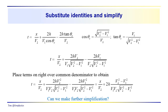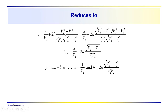We can simplify further by factoring the numerator as the square root of v2 squared minus v1 squared times itself, which cancels the square root of v2 squared minus v1 squared in the denominator, leaving v1 times v2. So the travel time for the critical refraction equals x over v2 plus 2h times the square root of v2 squared minus v1 squared over v1 times v2 — a straight line with slope 1 over v2.